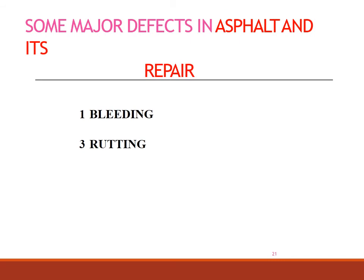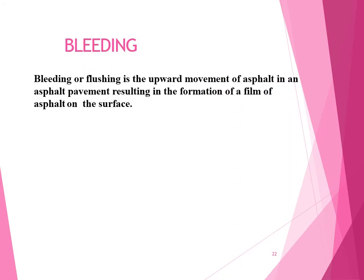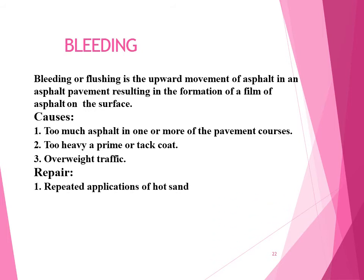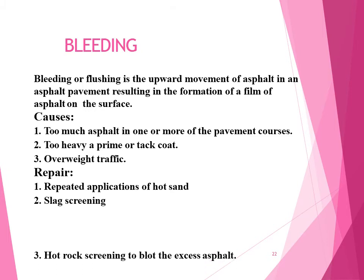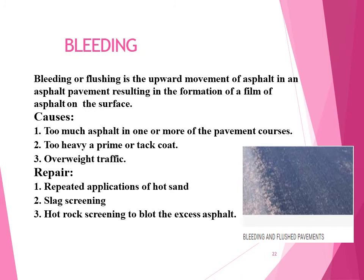Some major defects in asphalt roads and repair methodologies: bleeding, rutting, distortion, raveling, and cracks. Bleeding or flushing is the upward movement of asphalt in a pavement resulting in the formation of a film of asphalt on the surface. Causes include too much asphalt in one or more pavement courses, too heavy a prime or tack coat, and overweight traffic. Repair methodologies include repeated application of hot sand, slag screening, and hot rock screening to blot the excess asphalt.